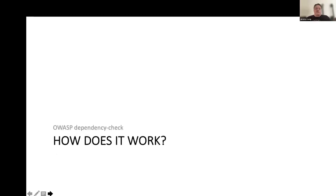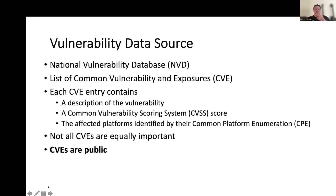So once we have all that data, how does Dependency Check actually work? We keep a local copy of the NVD which has the Common Vulnerabilities and Exposures. Every CVE has a description, a CVSS score, and a list of Common Platform Enumeration (CPE) entries — the software known to be vulnerable to that CVE.